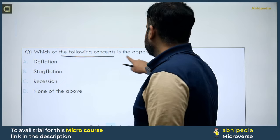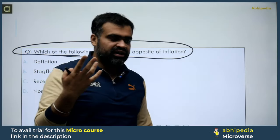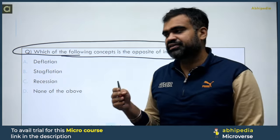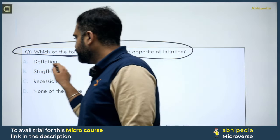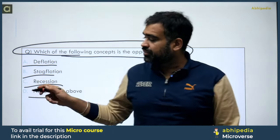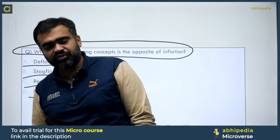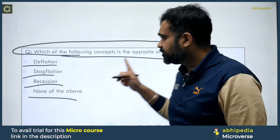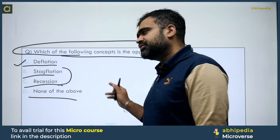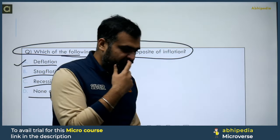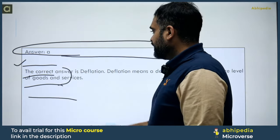Next question: Which of the following concepts is the opposite of inflation? We have seen that in inflation, money supply increases a lot in the market. So the opposite of inflation is where money supply will decrease — demand will fall basically. Options are: deflation, stagflation, recession, and none of the above. The correct answer for this question is option A — deflation. Deflation means money supply in the market decreases.